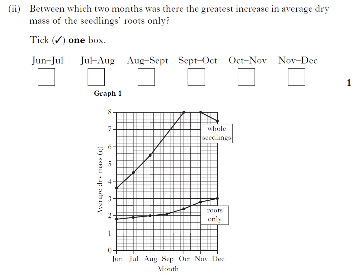Part two: between which two months was the greatest increase in average dry mass of the seedlings' roots only? So we're looking at this line, nothing else. Right, I think the easiest thing to do is just to write it down: June, July, August, September, October, November, and December.